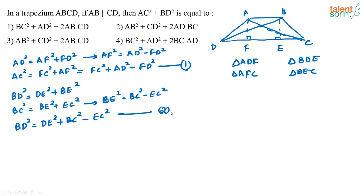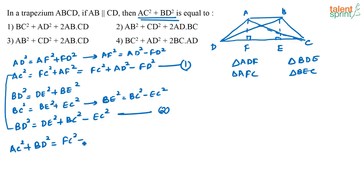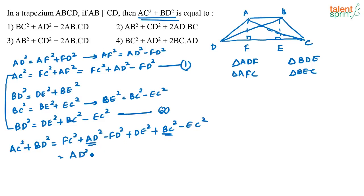These are the two equations I have. I have to find AC squared plus BD squared, so I add these two equations. AC squared plus BD squared equals FC squared plus AD squared minus FD squared plus DE squared plus BC squared minus EC squared. Taking AD squared and BC squared to one side, the remaining terms are FC squared, FD squared, DE squared, and EC squared.